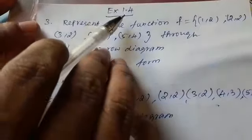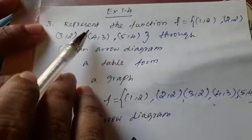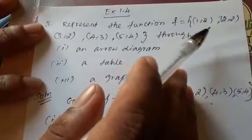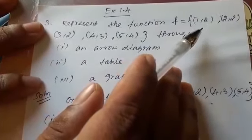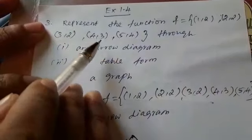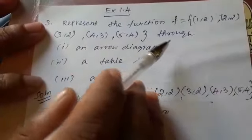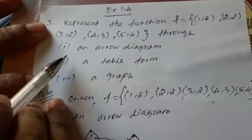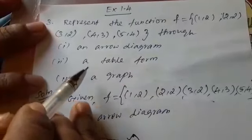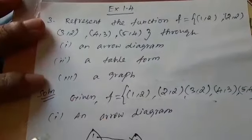Exercise 1.4, third sum. Represent the function F = {(1,2), (2,2), (3,2), (4,3), (5,4)} through: first, an arrow diagram; second, a table; third, a graph.